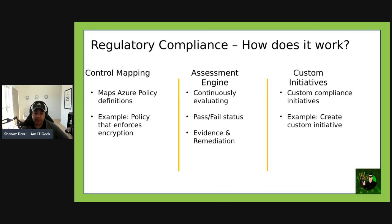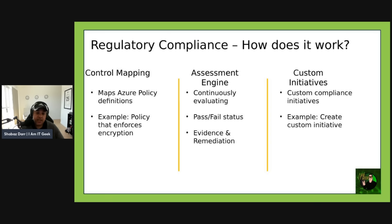How does it actually work? First, control mapping: Defender for Cloud maps Azure Policy definitions to specific compliance controls. For example, a policy that enforces encryption at rest maps to a control in CIS 1.1.0 or NIST AC-17. The assessment engine continuously evaluates your environment against your selected regulatory standards, surfacing a pass or fail status for each control, and provides evidence and remediation guidance for any controls that have failed.